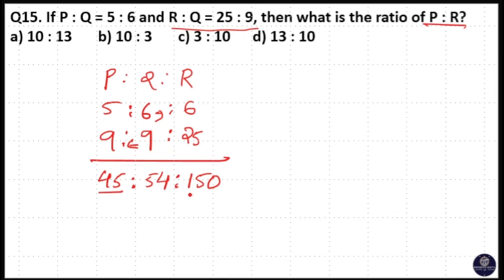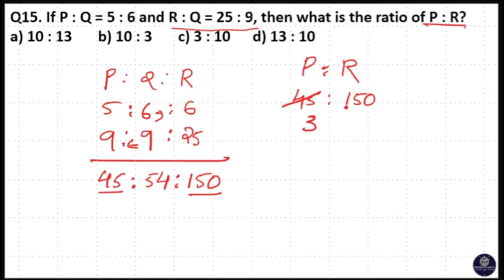This is P and this is R: 45 is to 150. P is to R — 15 into 3 is 45, 15 into 10 is 150. So 3 is to 10 is your answer. Option C is your answer.